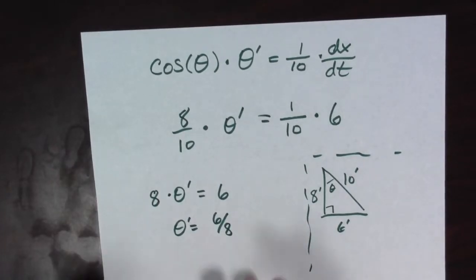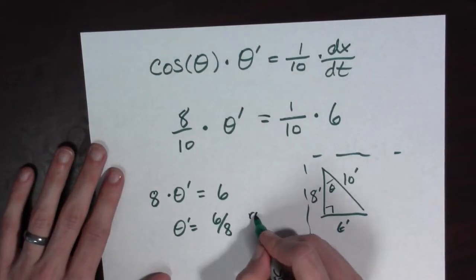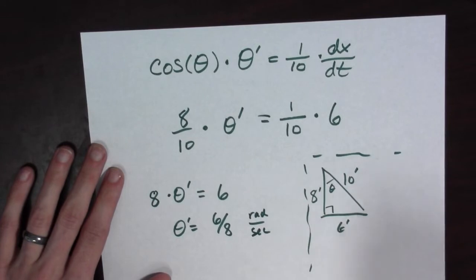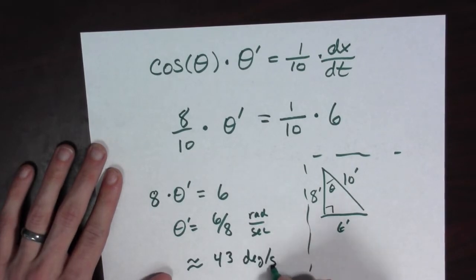Now, this, of course, is in radians per second. So this is in radians per second. And we need to convert to degrees. Well, doing that, we see that it's approximately 43 degrees per second.